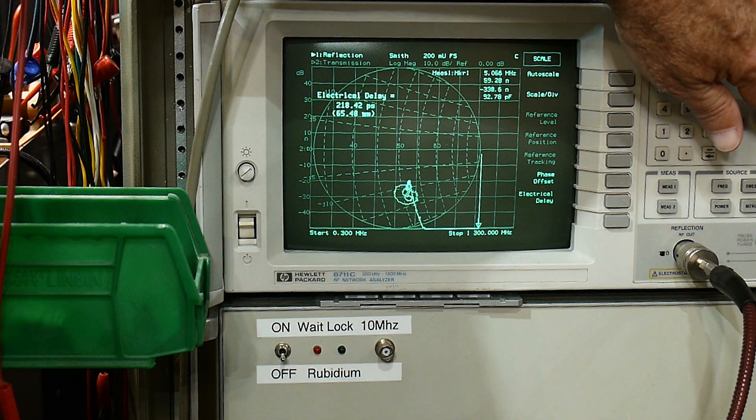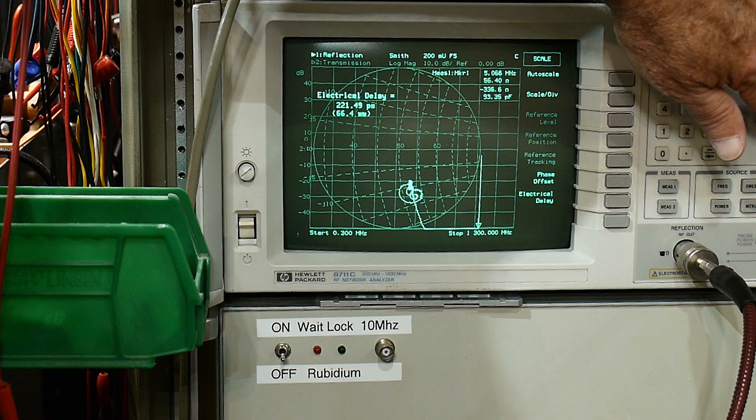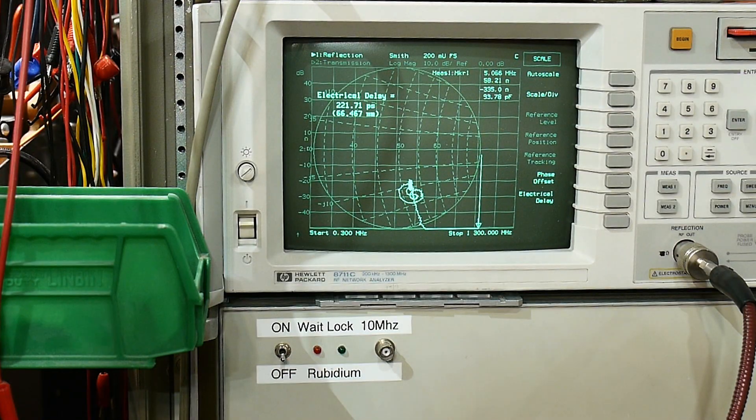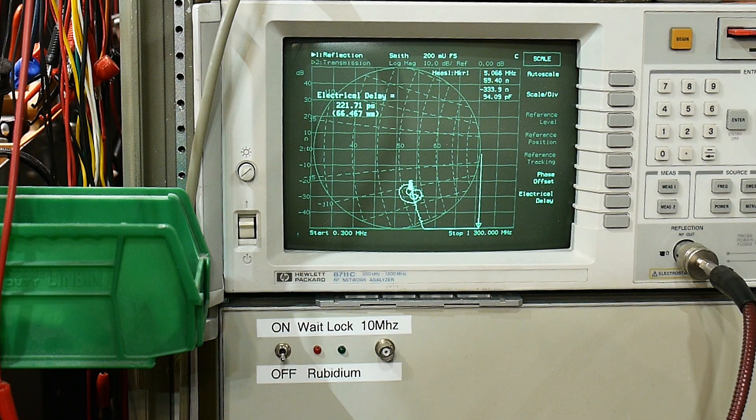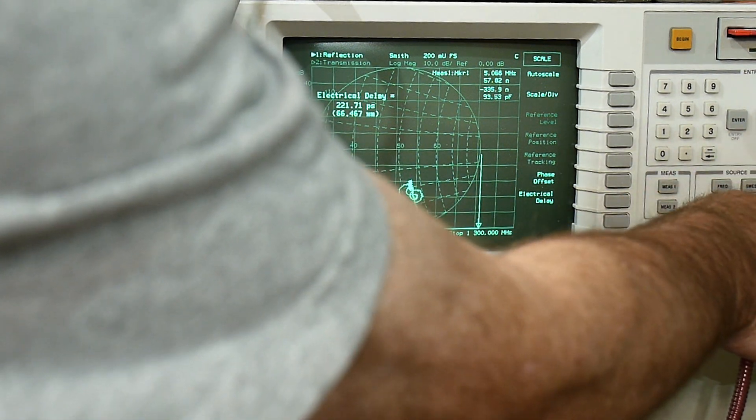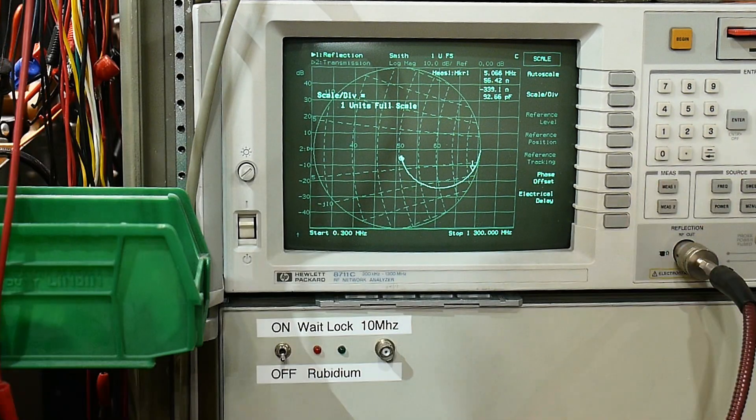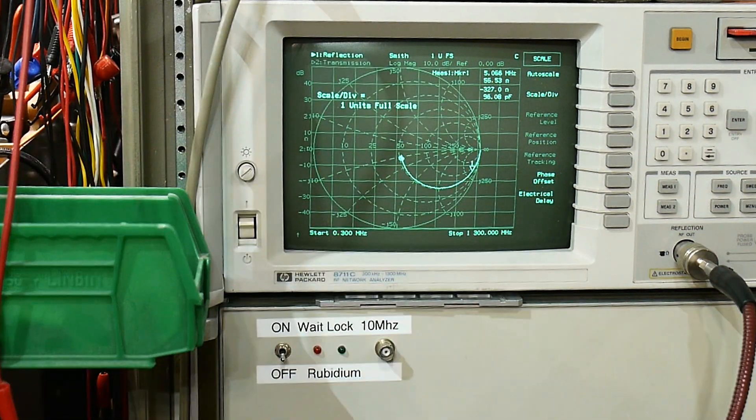We can kind of get to probably around there. Now why doesn't it get all the way to 50 ohms? Well I'm not quite sure, but it gets rid of that little crook.